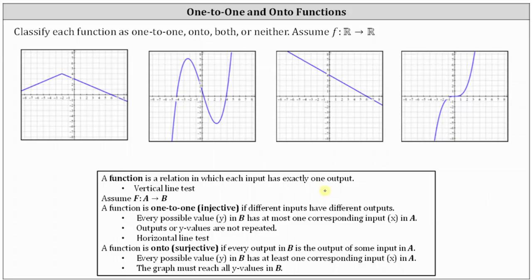If we wanted to verify this, we could use the vertical line test. The vertical line test indicates that if a vertical line intersects a graph in more than one point, then the graph does not represent a function; if it doesn't, then it does represent a function. Notice how for our four graphs, if we pass vertical lines across the graphs, never will a vertical line intersect a graph in more than one point, which verifies all of the graphs pass the vertical line test and represent functions — meaning every input has exactly one output.